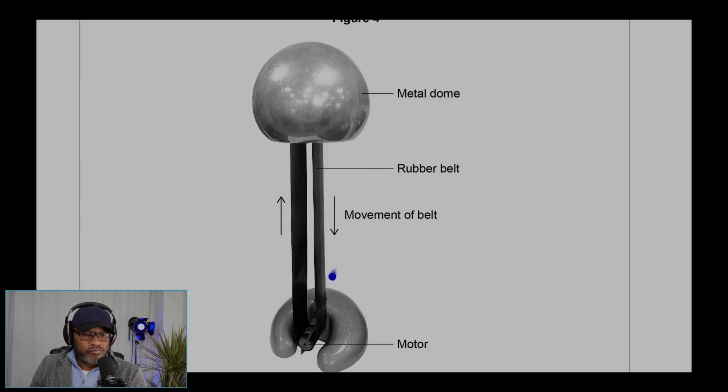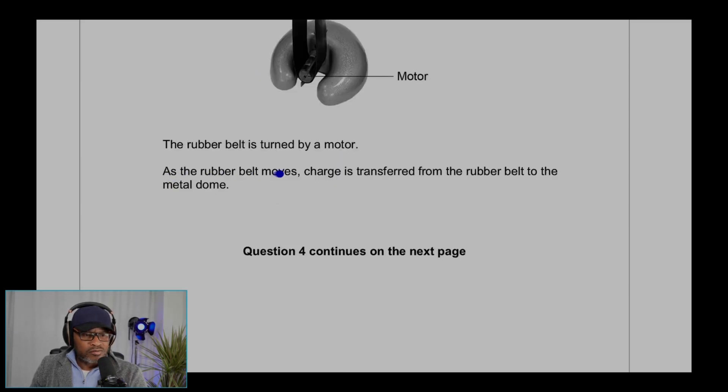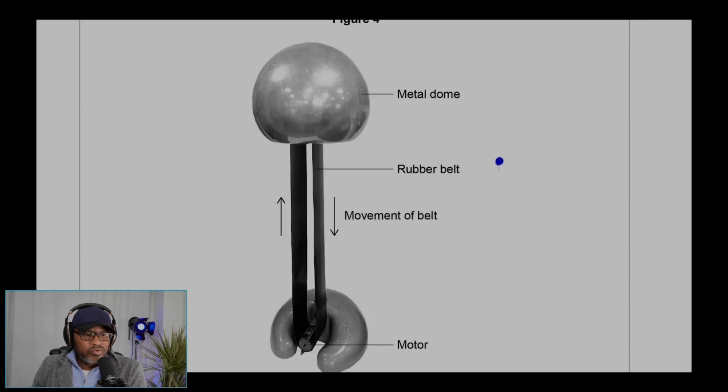This is the motor over here. That's the rubber belt and that's the motor. As the rubber belt moves, charge is transferred from the rubber belt to the metal dome. Charge will be electrons.